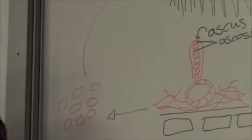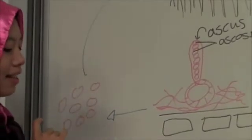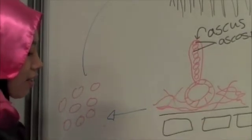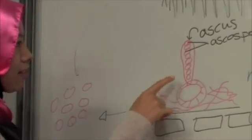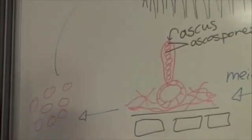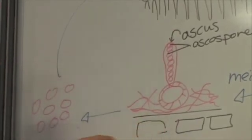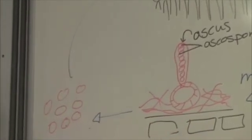During the spring time, the cleistothecium soaks up water and cracks open. The tip of the single ascus in each cleistothecium then bursts open and discharges eight ascospores, which infect new rose hosts.